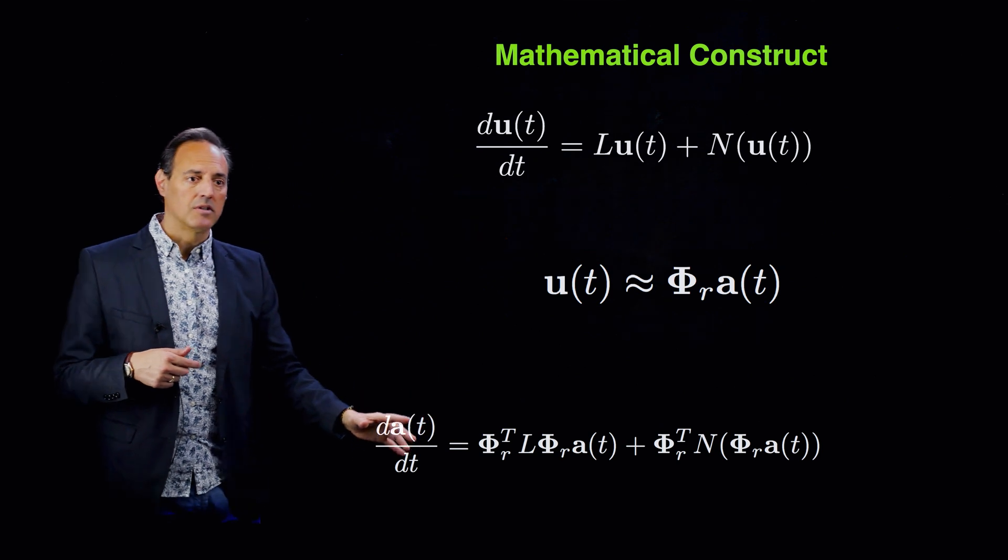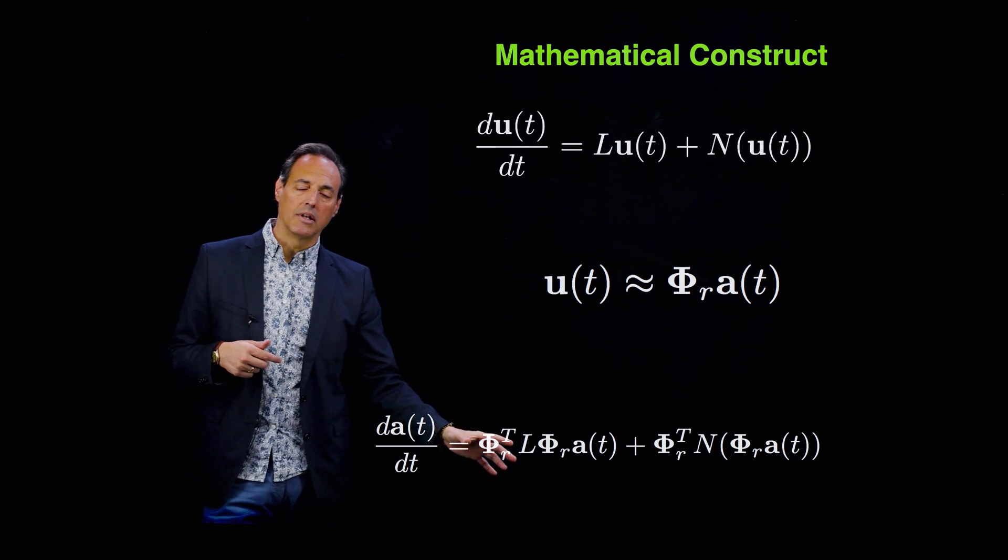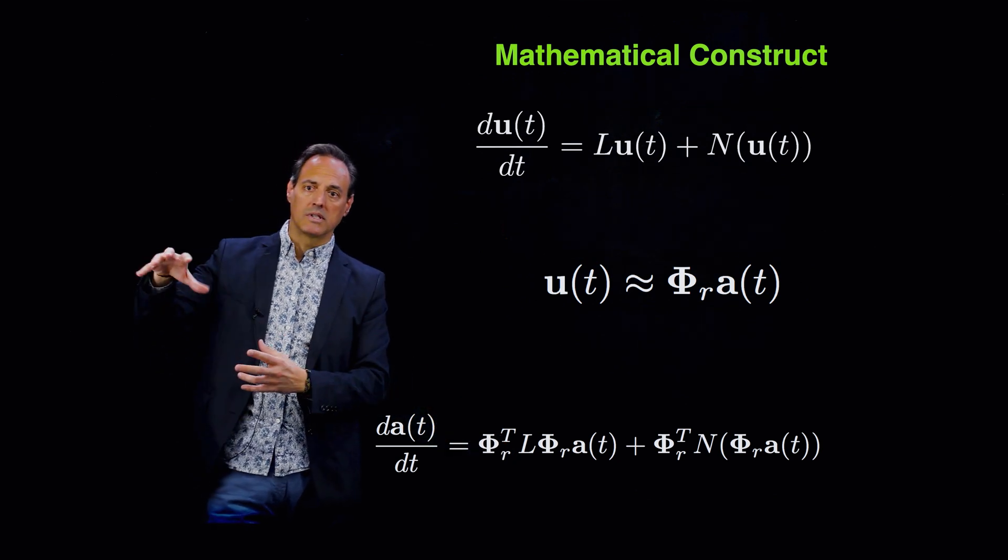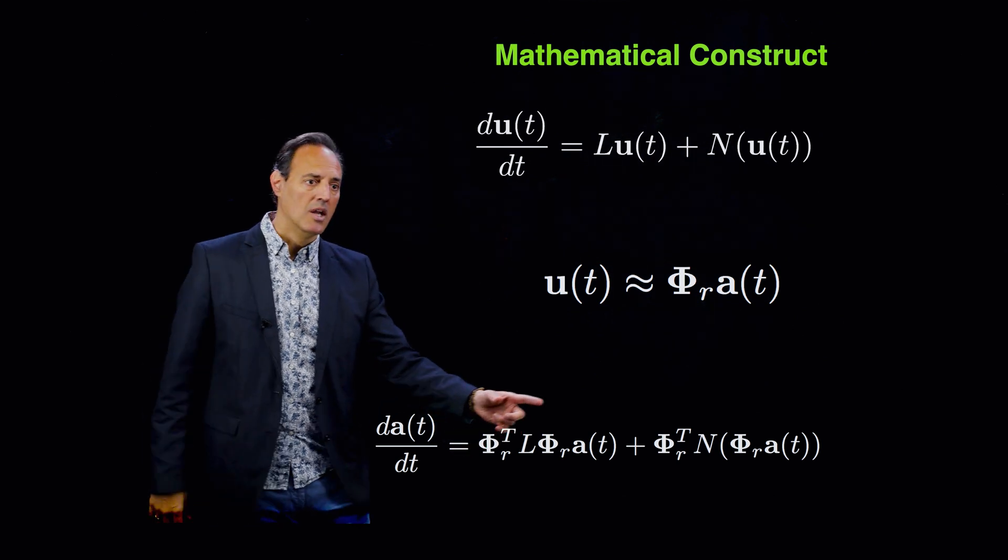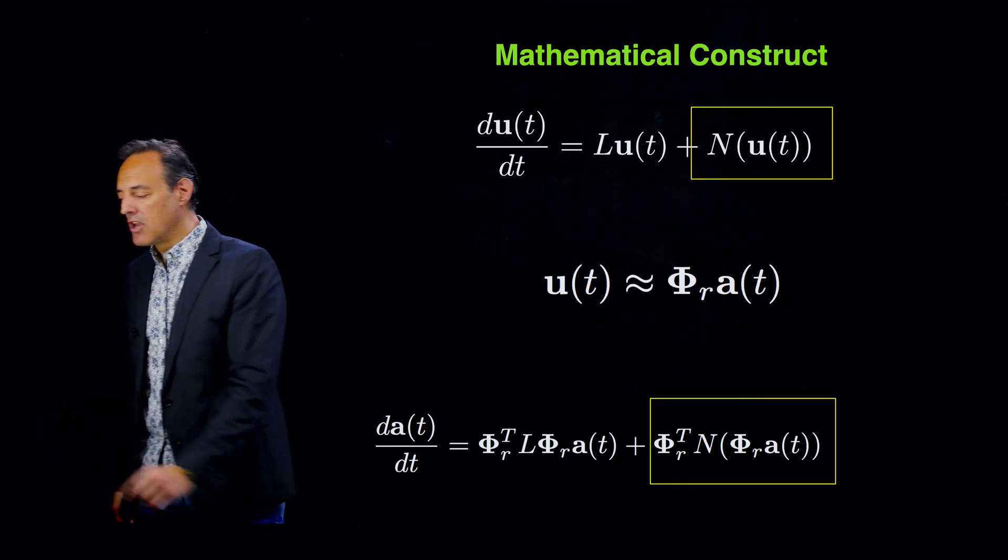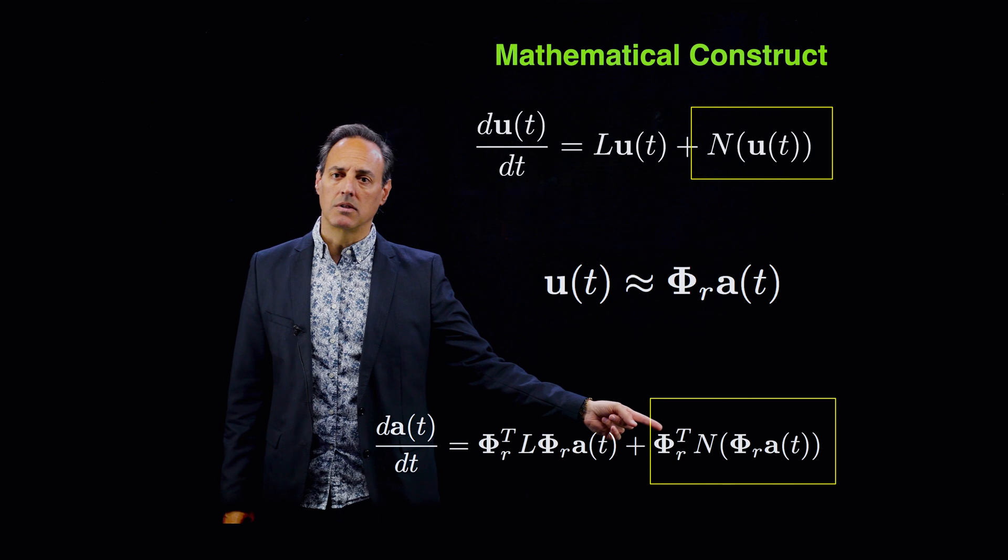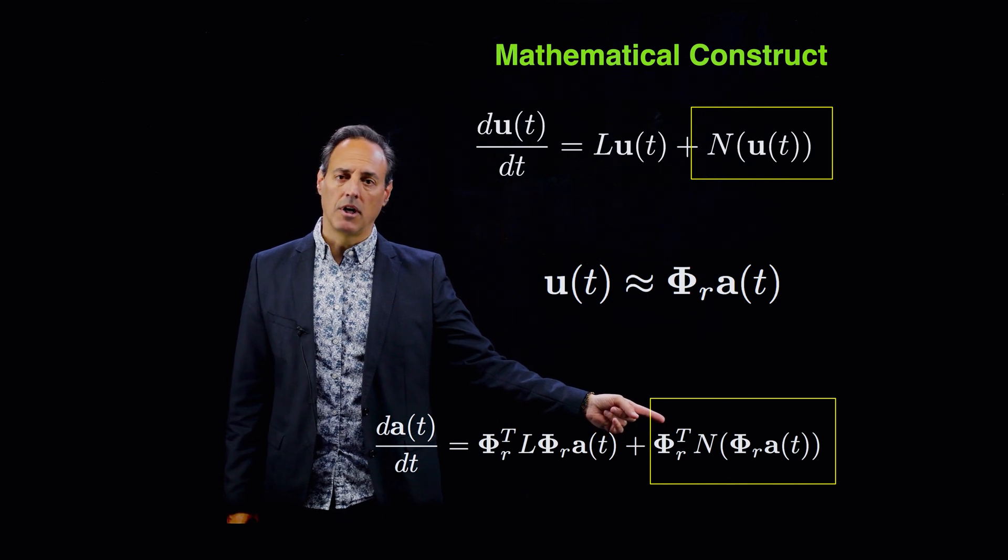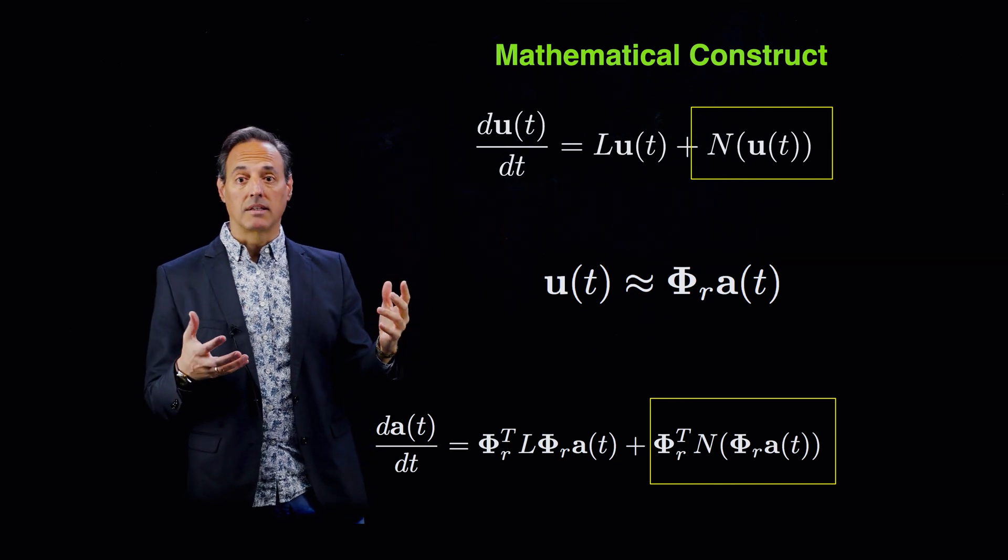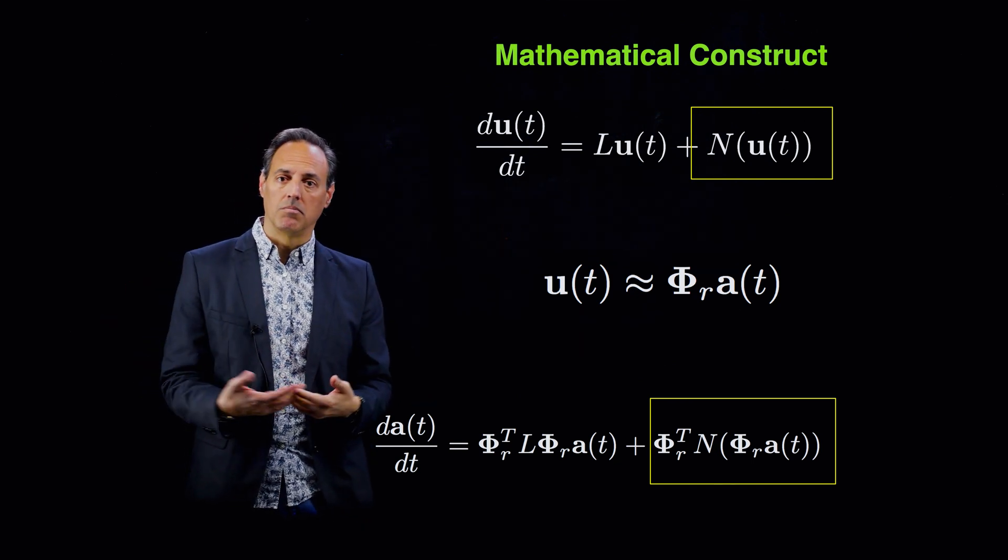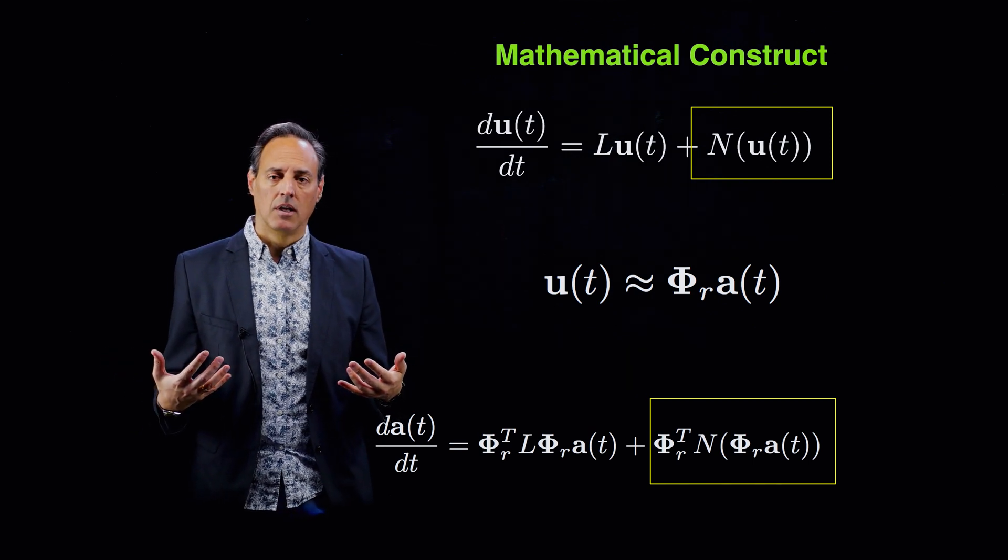These are the equations of motion in that subspace for the a. Everything here is easy to handle. For instance, even the linear operator can be constructed once upfront—you do these inner products, this becomes an r by r matrix so that's low dimensional. But here's where the problem lies: the nonlinearity itself generates a problem because evaluating the nonlinearity requires you go back up to the full dimensional state space to take inner products in that space and then drop it down again, which means you haven't saved anything.